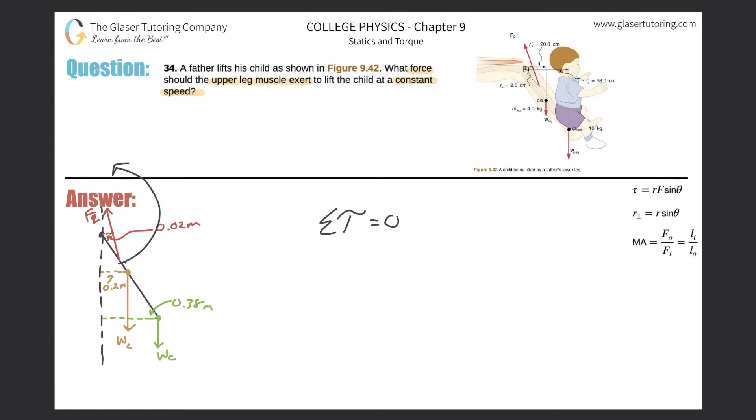So I'll say the torque of the quadriceps will be positive. The weight of the leg, another force acting on the tibia right there, is going to rotate the tibia clockwise, therefore it's negative. So torque of the leg, and same thing with the child, produces a negative torque. Therefore, the torque of the quadricep will equal the torque of the leg plus the torque of the child.